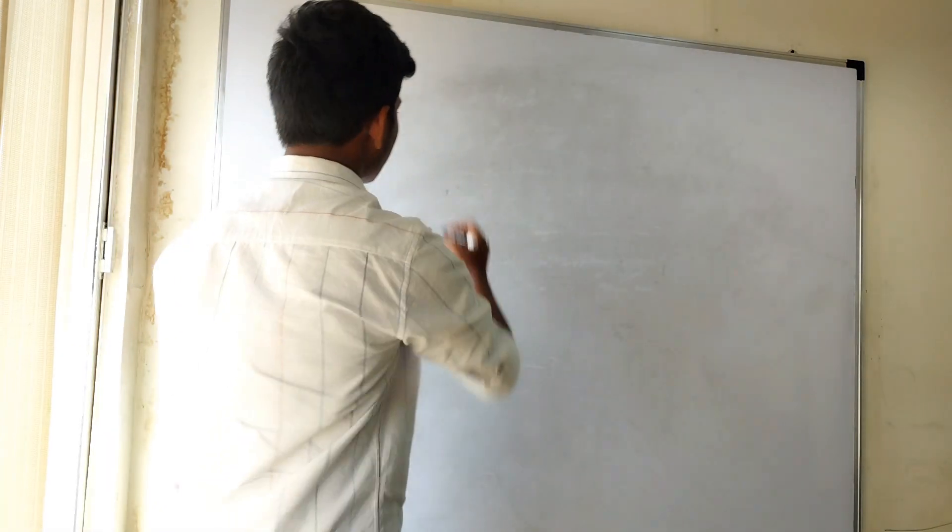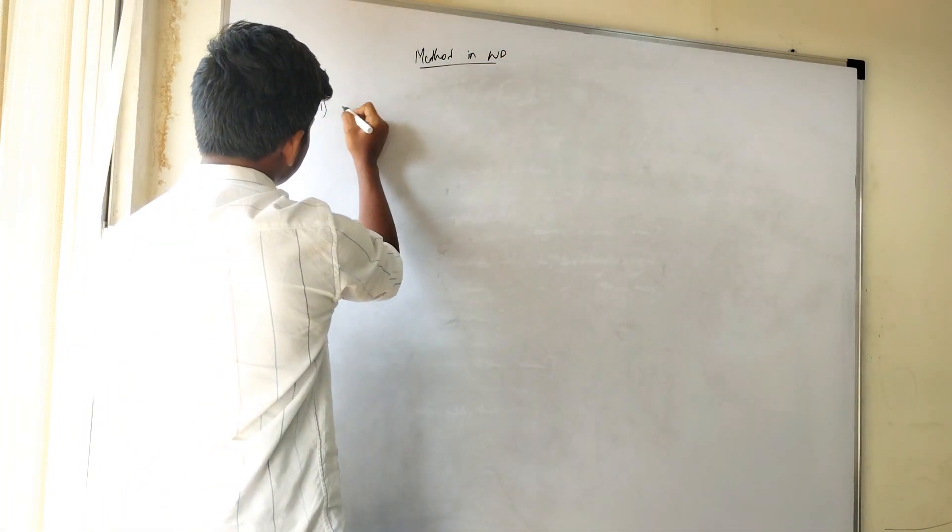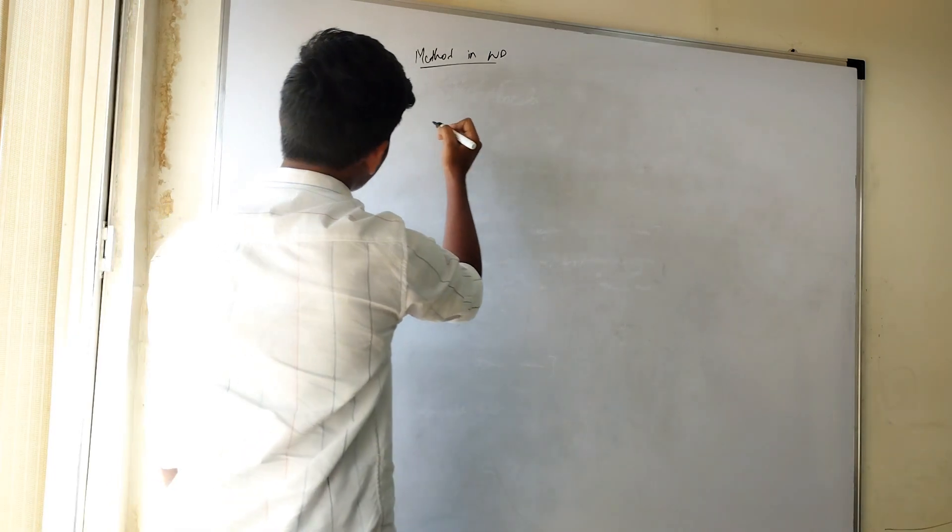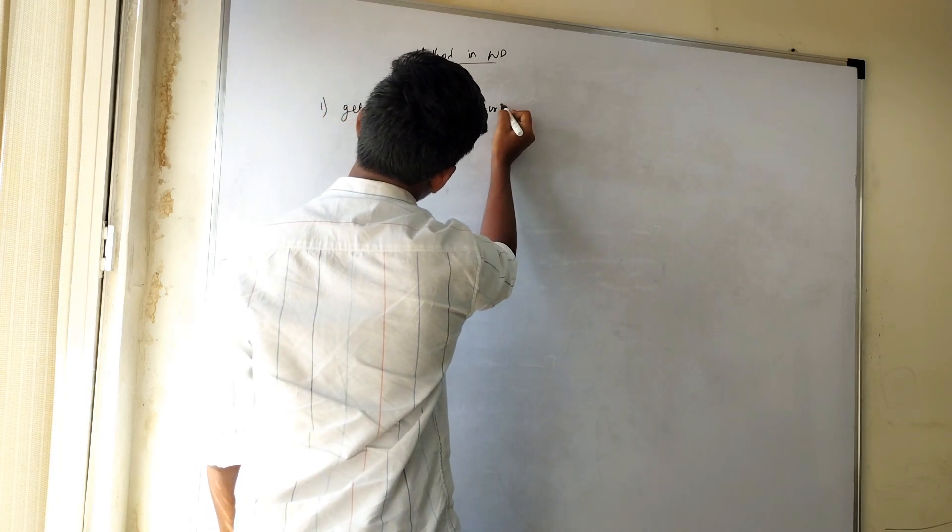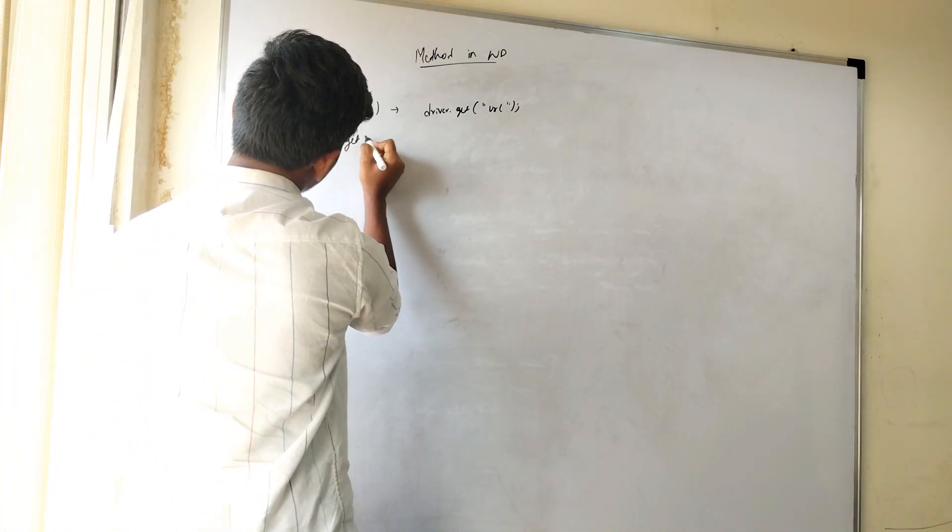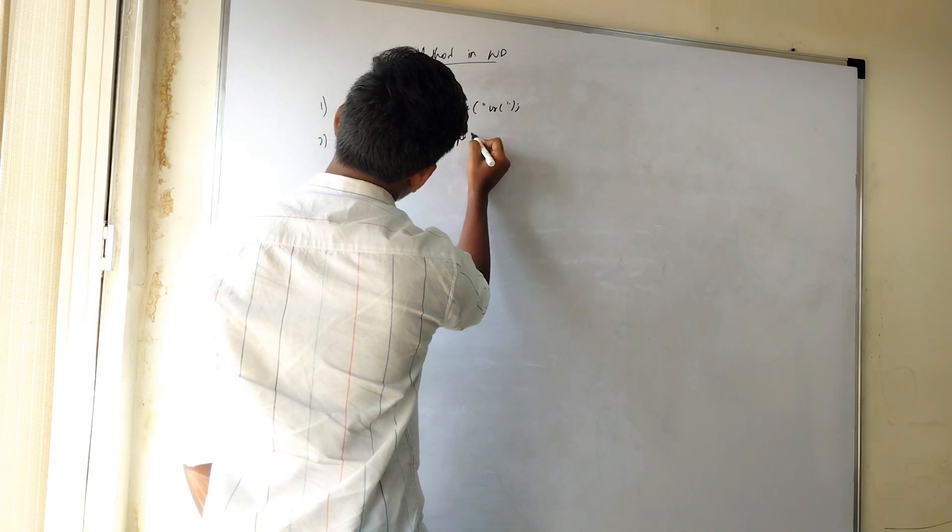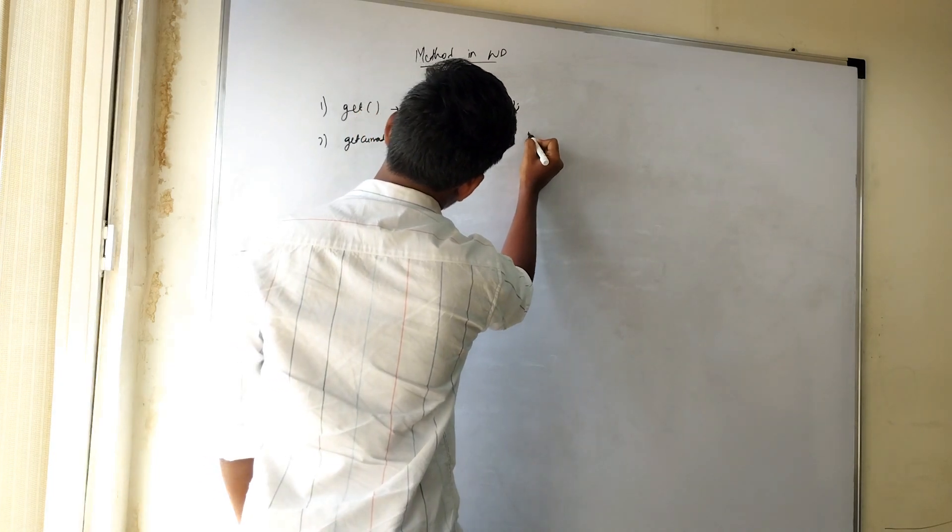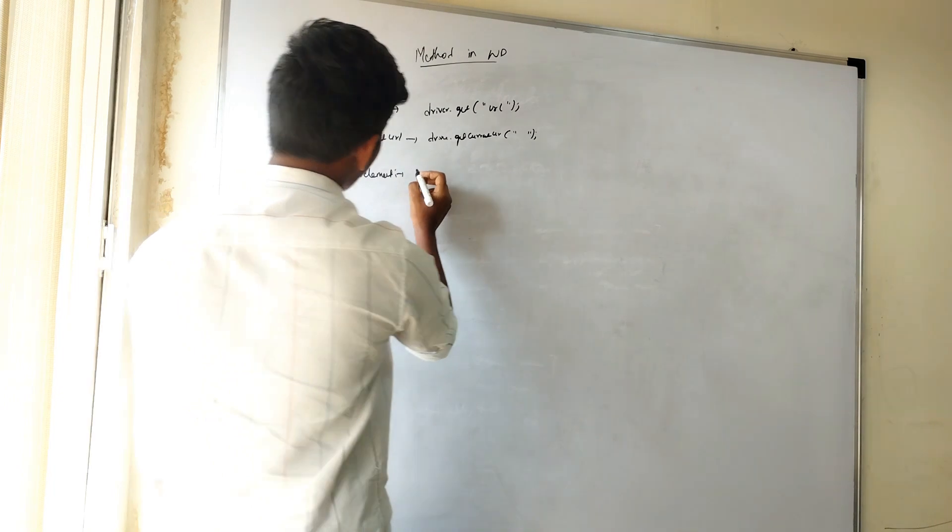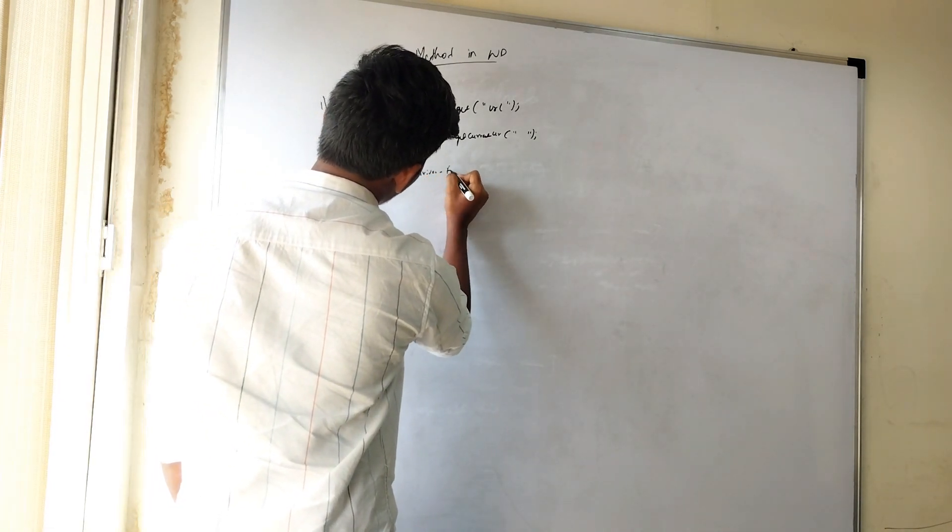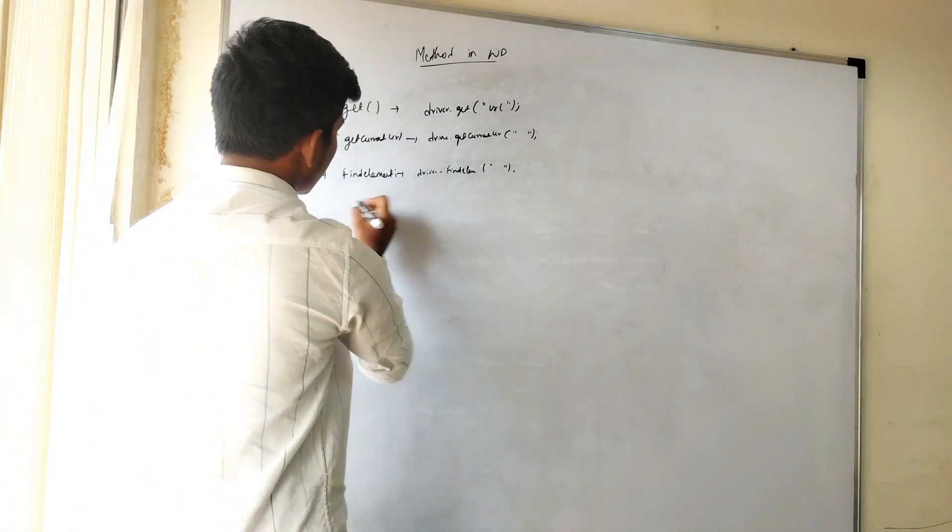What are methods in WebDriver? Methods in WebDriver. First one is get. Get is used to navigate the URL. The syntax is driver.get and here we will copy the URL. And second one is get current URL. And the third one is find element. Find element, first we write driver.find element. Here we write xpath or name by id. We can choose. And after it will navigate the path.